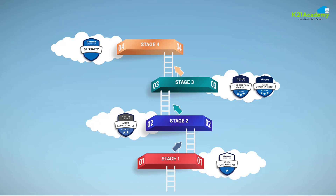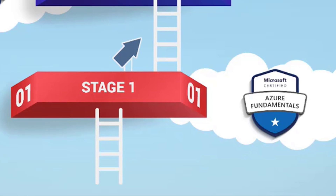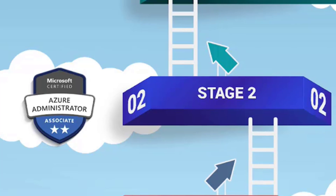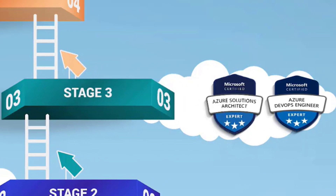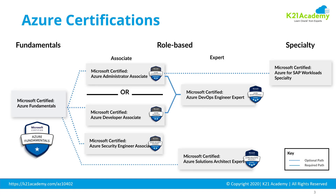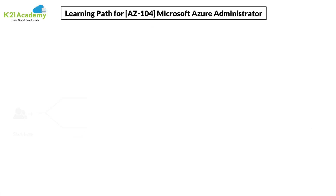In that training, she first starts with role-based certifications available for Azure Cloud, right from Azure Fundamentals — that's AZ-900 — then Azure Administration, which is AZ-104, earlier AZ-103. Then other level-three certifications covering DevOps, which is AZ-400, or Solution Architect that includes two certifications, AZ-300 and AZ-301. She then covers who the AZ-104 certification is for and what the exam weight is in each topic.